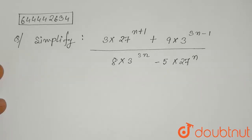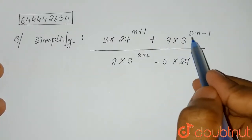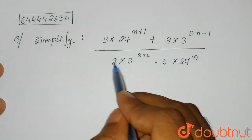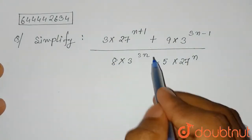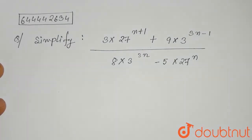Hello everyone. The question is: simplify 3 into 27 to the power n+1, plus 9 into 3 to the power 3n minus 1, divided by 8 into 3 to the power 3n minus 5 into 27 to the power n.